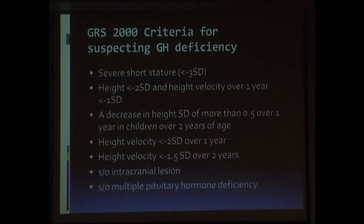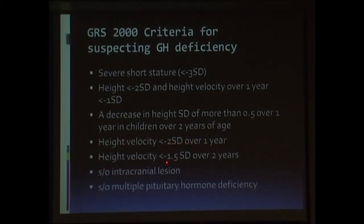But what we are mainly interested in as pediatricians are the auxological criteria to diagnose growth hormone deficiency. This essentially means the child is extremely short — less than three standard deviations for his gender and age as per the local centiles. His height velocity is extremely poor: less than two standard deviations over a period of one year, or less than 1.5 standard deviations over a period of two years. To remember broadly: a child less than two centiles below the average with a poor growth velocity of less than the 25th centile should be investigated for growth hormone deficiency.